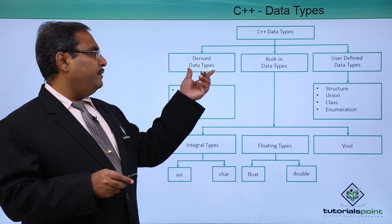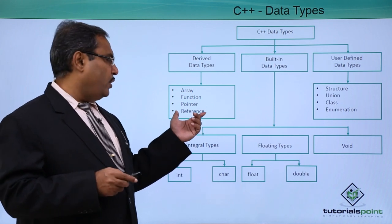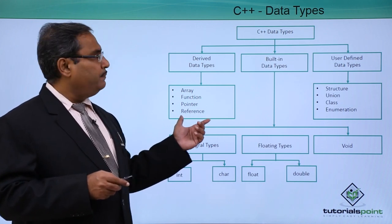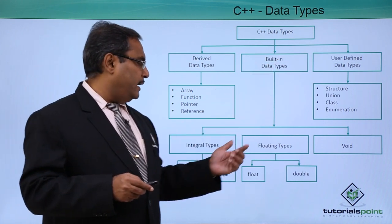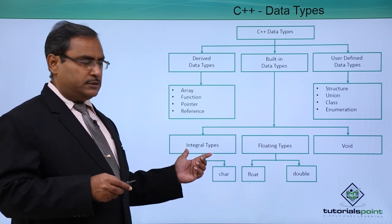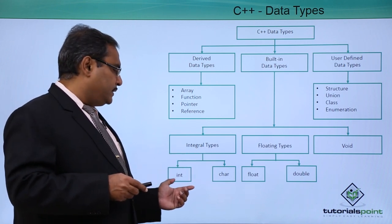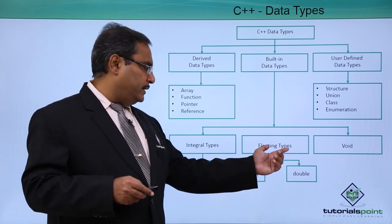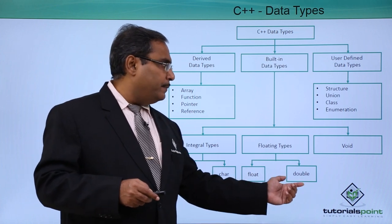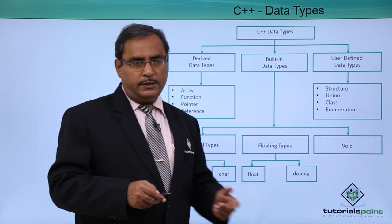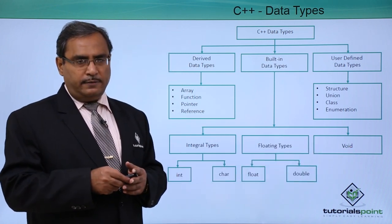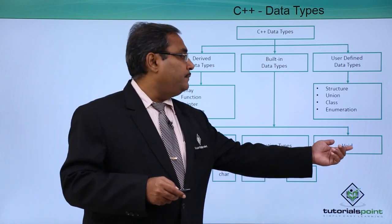The first one is the derived data types: we have array, function, pointer, reference, and so on. Here we have the built-in data types like your integral types where you have integer and character, the floating types where you have float and double, and void. Void means it is returning nothing, that is a void data type.